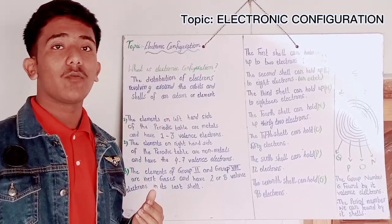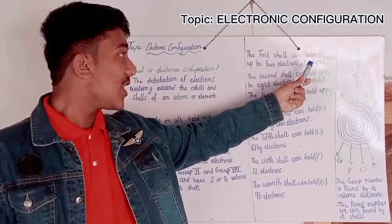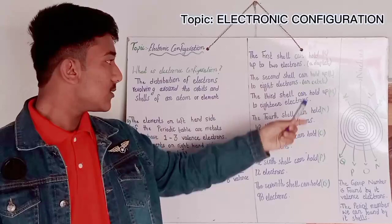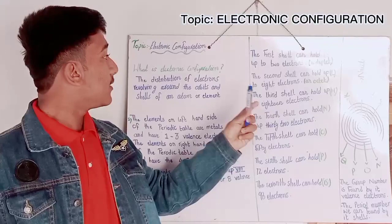Now I will tell you about the name of the shells. The first shell is K shell and also called a doublet shell. The first shell can hold up to 2 electrons. The second shell is called L shell or an octet shell. The second shell can hold up to 8 electrons.